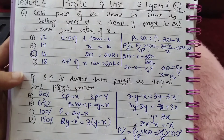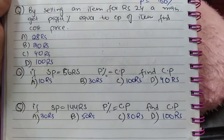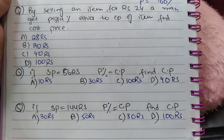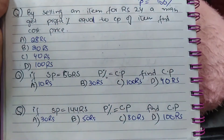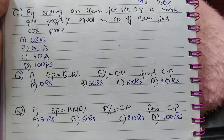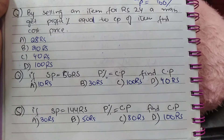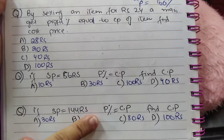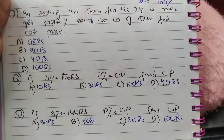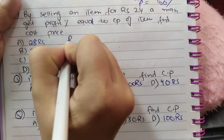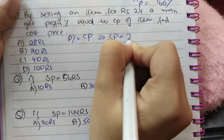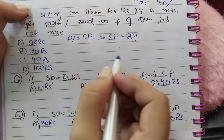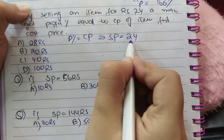Next type of question: by selling an item for 24 rupees, a man gets profit percent equal to the CP of the item — find the cost price. In questions where selling price is given and profit percent equals cost price, remember this shortcut: divide the selling price into two factors whose difference is 10.